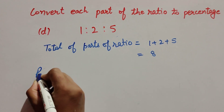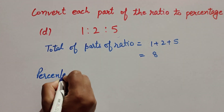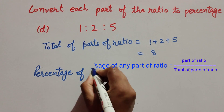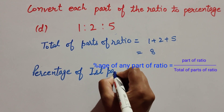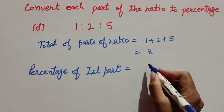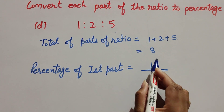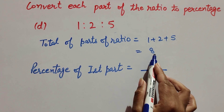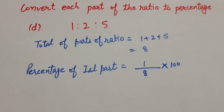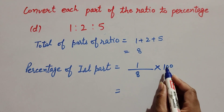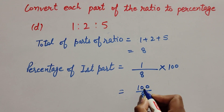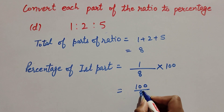Now we find the percentage of the first part of the ratio. Percentage of first part is equal to the first part — which is one — over the total of all the parts — which is eight — multiplied by one hundred. One multiplied by one hundred is one hundred over eight.